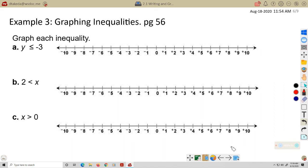Graphing inequalities, we're going to graph each of these here, and this is pretty straightforward, I think. Y is less than or equal to negative 3, well, we find negative 3, and we're going to put the boundary in, but because it's less than or equal to negative 3, we're going to fill that in, and we're going to graph to the left, because we want the numbers that are less than negative 3.